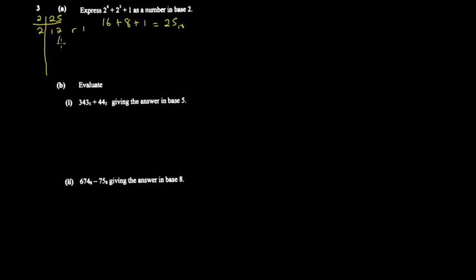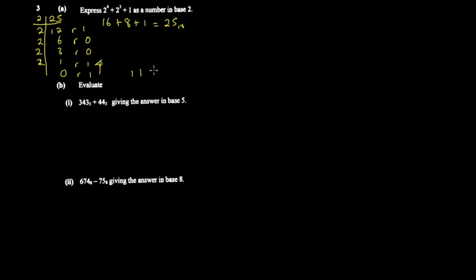Then: 2 into 12 gives 6 remainder 0; 2 into 6 gives 3 remainder 0; 2 into 3 gives 1 remainder 1; 2 into 1 gives 0 remainder 1. Reading the remainders from the bottom up, you get 11001 base 2. But there's a faster way to solve the same problem.